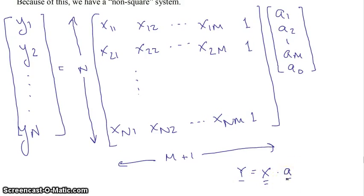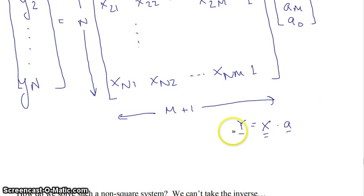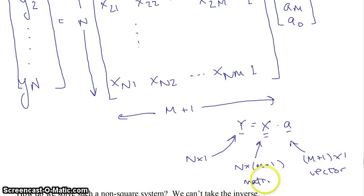And so what you get is the vector y is equal to the matrix of x values, with a column of 1s at the end, times a, where a is your vector of unknowns here. And so if you look at the size of these things here, we have an n by 1 vector here. We have an n by m plus 1 matrix there. And this is an m plus 1 by 1 vector. And so it's a non-square system.